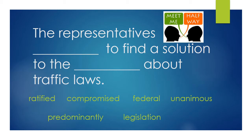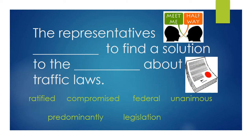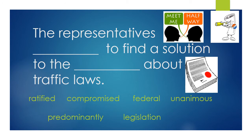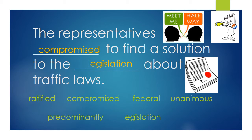To the blank about traffic laws — to the what? Federal would be an adjective. To the unanimous about traffic laws doesn't make any sense. What needs to go in the blank is most likely a noun, a thing. Predominantly would be an adverb — that would not fit. But legislation would fit. So the representatives compromised to find a solution to the legislation about traffic laws. Working through that sentence, we had to use the context clues and use what we knew about what those vocab terms meant.